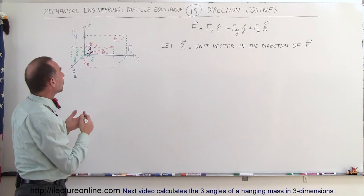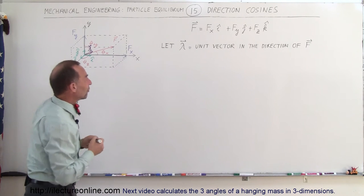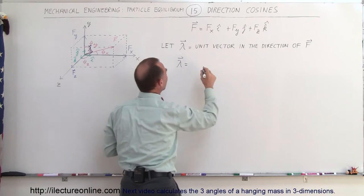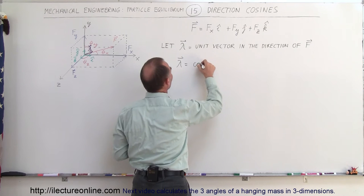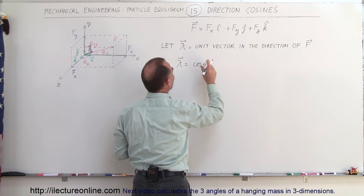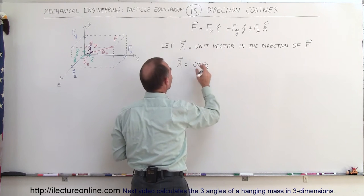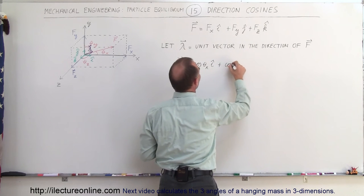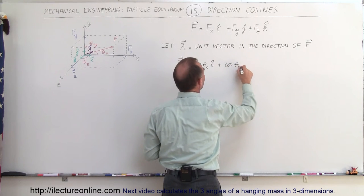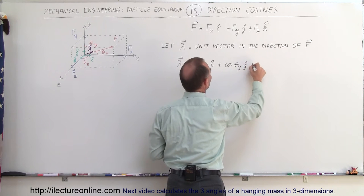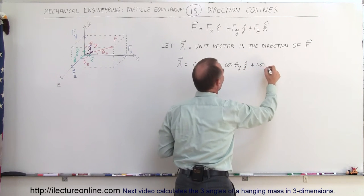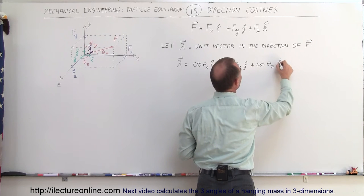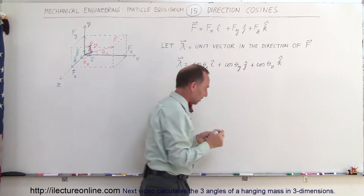We can write the unit vector as follows: the unit vector is equal to the cosine of the angle between the vector and the x-axis in the x-direction, plus the cosine of the angle between the vector and the y-axis in the y-direction, plus the cosine of the angle between the vector and the z-axis in the z-direction.